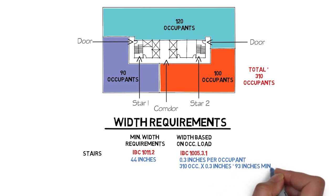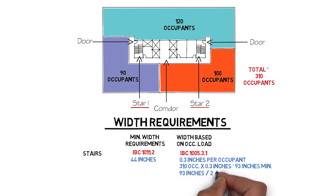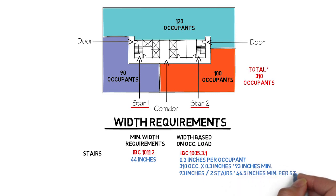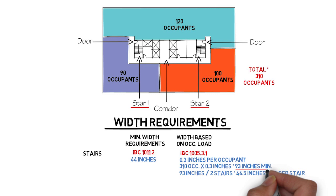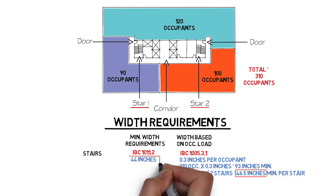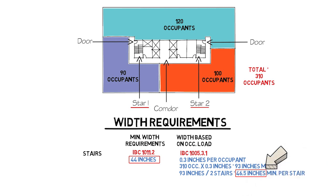In this example we have two stairs, which is normally the minimum number of stairs you need for a floor. Therefore, if we take the 93 inches and divide by two because there are two stairways, we are required for each stairway to be 46.5 inches wide minimum. It's important to note that these are minimums. 46.5 inches is greater than 44 inches, so our width based on occupancy is what we need to use since it is the most stringent requirement of the two. That is how wide our stairs have to be at minimum.